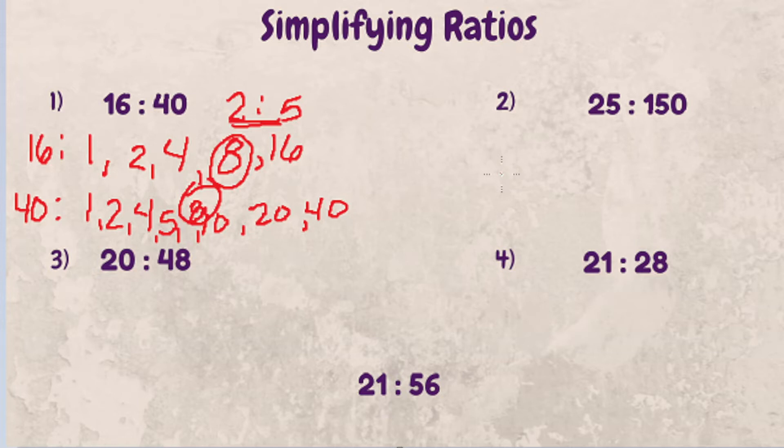Second example. Let's look at 25 to 150. So right off the bat, I know that 25 can go into 150. 25 times 4 is 100, and then 2 more times is 150. But even if you didn't spot that right off the bat, what you could do is...